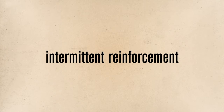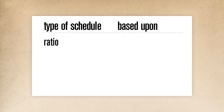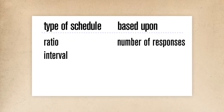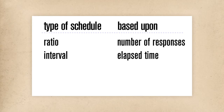Switching to an intermittent schedule, where responses are reinforced only some of the time, can produce longer-lasting behaviors with fewer reinforcements. There are two types of schedules for reinforcement. Ratio schedules are based upon the number of times a response occurs. Interval schedules are based on time. Both types of schedule can be either fixed or variable. Let's take a closer look at each, beginning with ratio schedules.